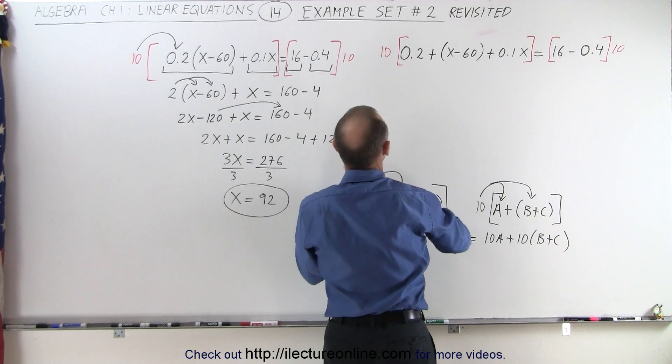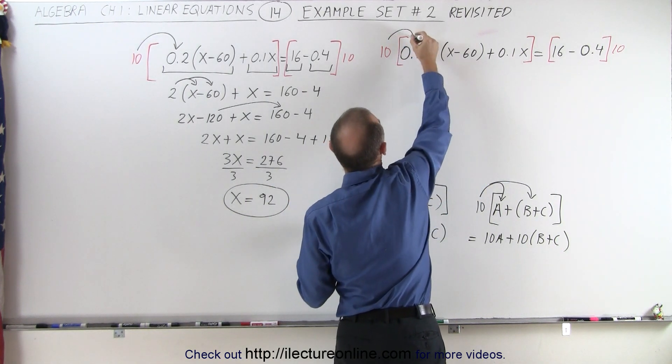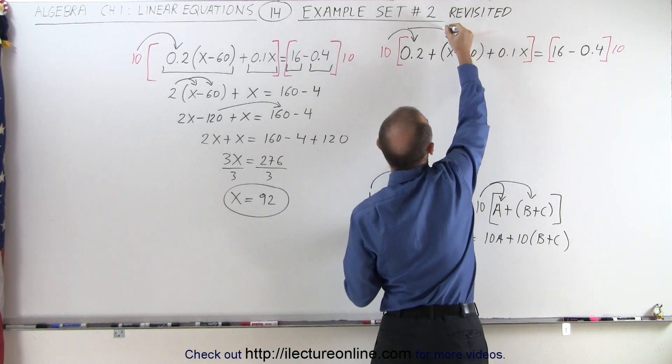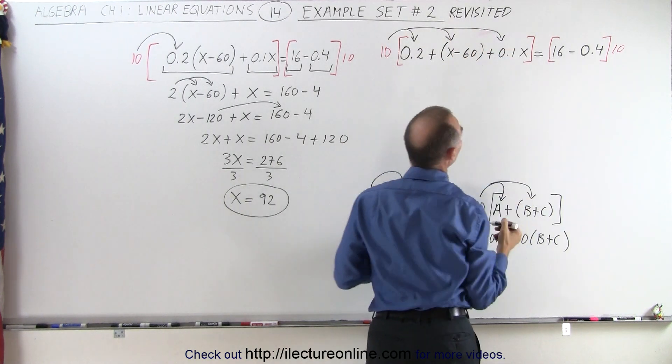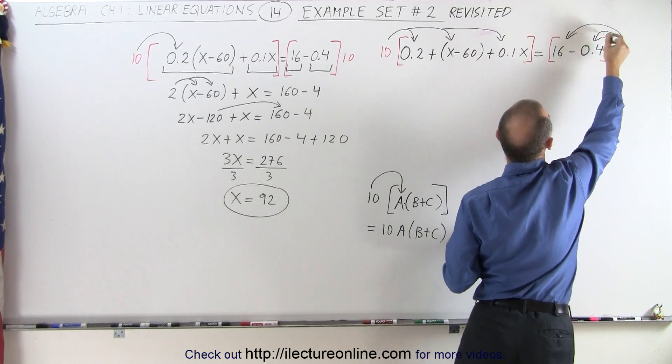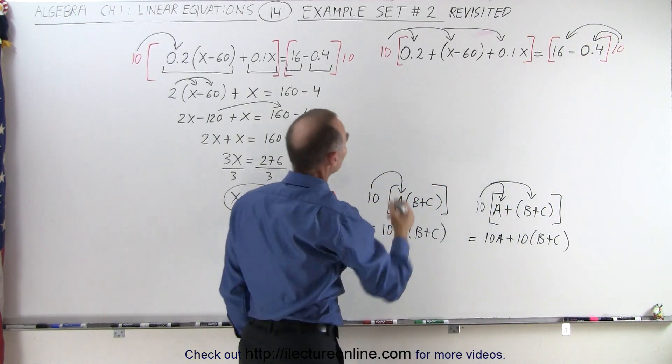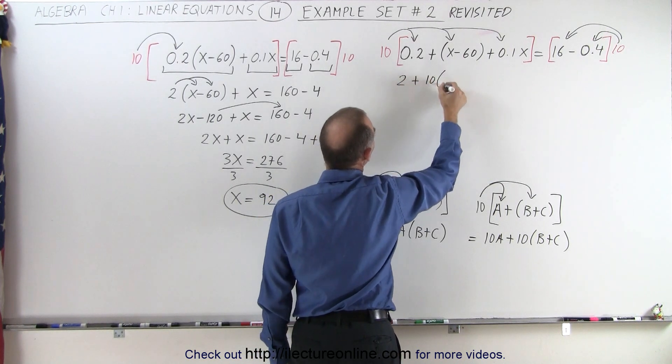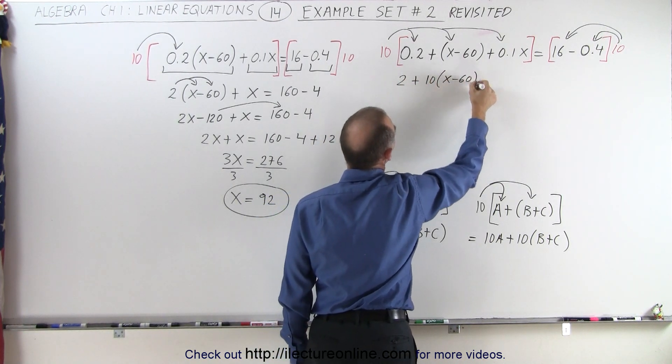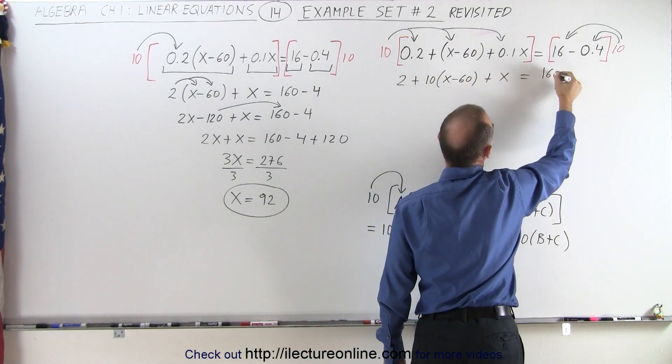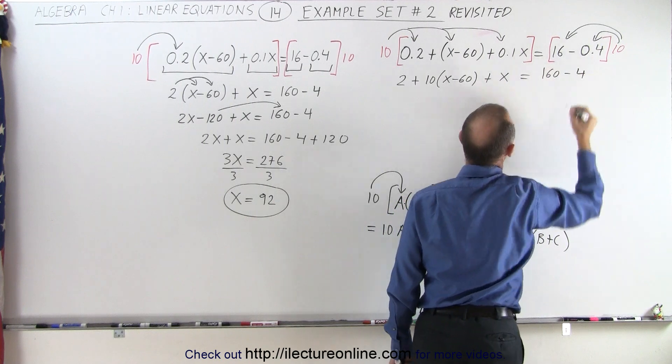Notice in this case the 10 would be multiplied with a 0.02 with the x minus 60 and with the 0.1x. Over here the 10 will be multiplied with the 16 and the 0.4. So this becomes 2 plus 10 times x minus 60 plus 1x equals this would be 160 minus 4.